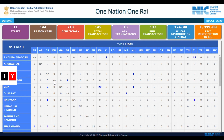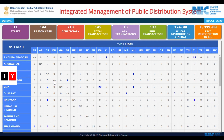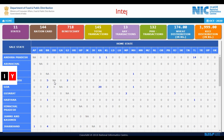To achieve the aim of national portability, a standardized ration card format has been prepared for ration cards under the NFSA. This new format includes the required minimum details of the ration card holder, and states can add more information as per their requirements. For national portability, state governments have been asked to issue ration cards in a bilingual format.